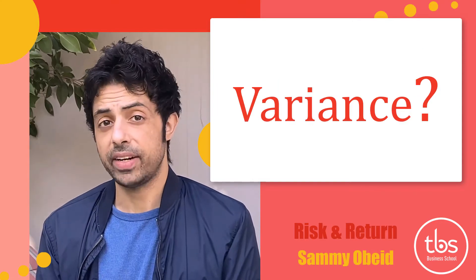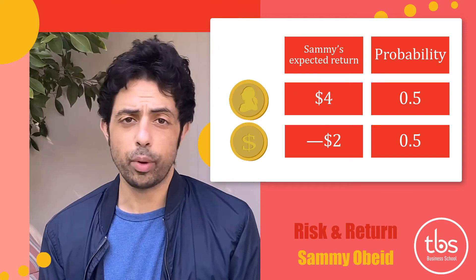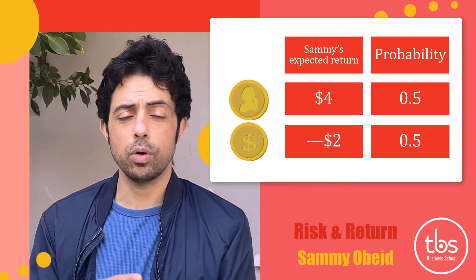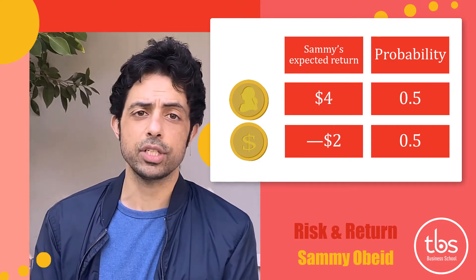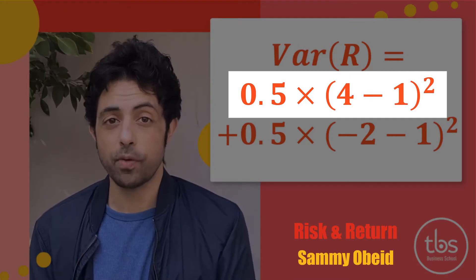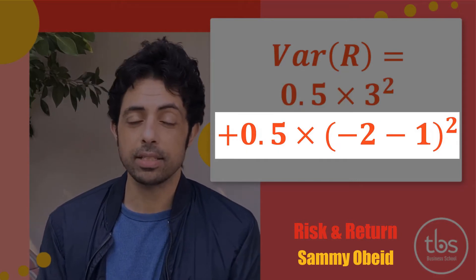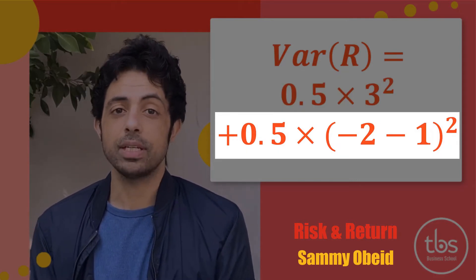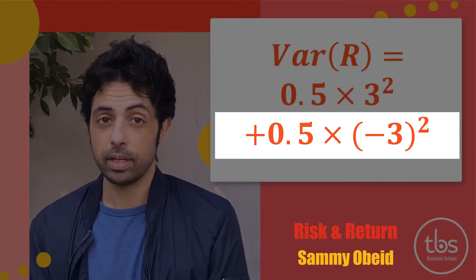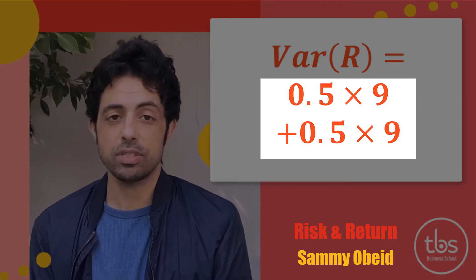So what's the variance? Well, let's plug it into our equation. We know that the probabilities are still 0.5 for each, and the two returns are $4 or negative $2. Plugging that in, the variance is the sum of 0.5 times (4 minus 1) squared, which is 0.5 times 3 squared, plus 0.5 times (negative 2 minus 1) squared, which is 0.5 times negative 3 squared, which equals 0.5 times 9 plus 0.5 times 9, which is equal to 9.